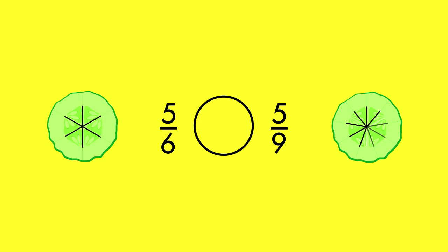To compare fractions that have the same numerators, look at the denominators. The fraction with the smaller denominator is greater. That's because when a whole is divided into fewer pieces, those pieces are larger. Five parts of six is greater than five parts of nine. Five-sixths is greater than five-ninths.